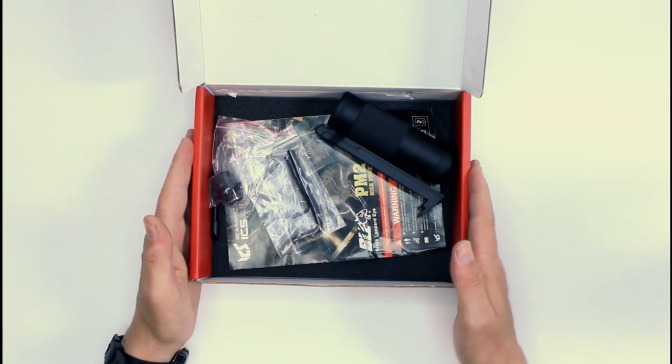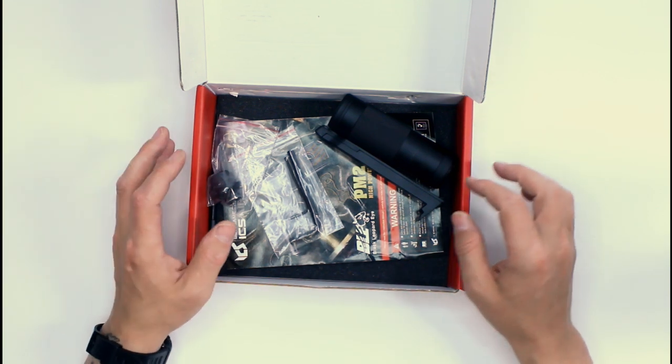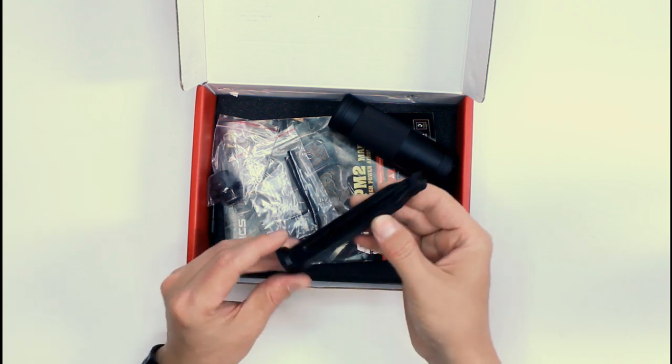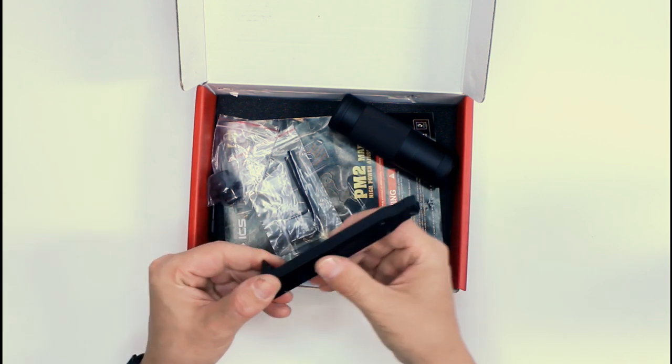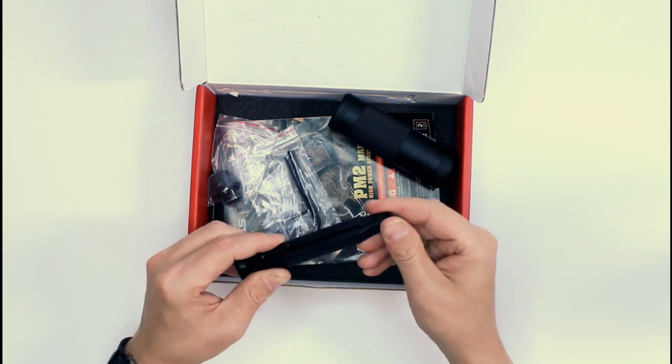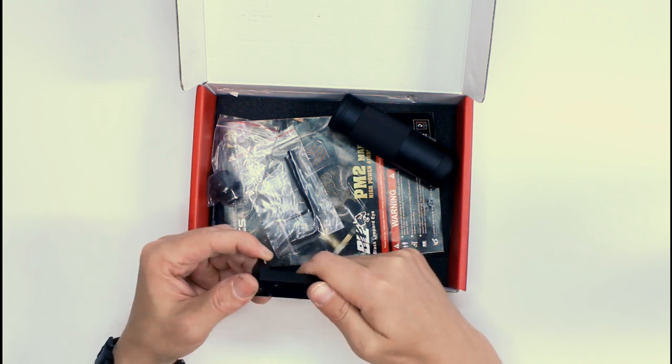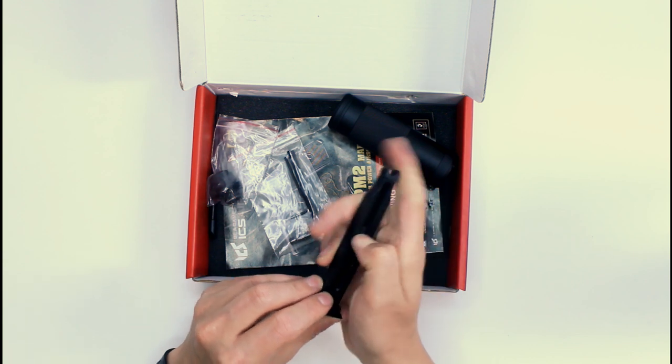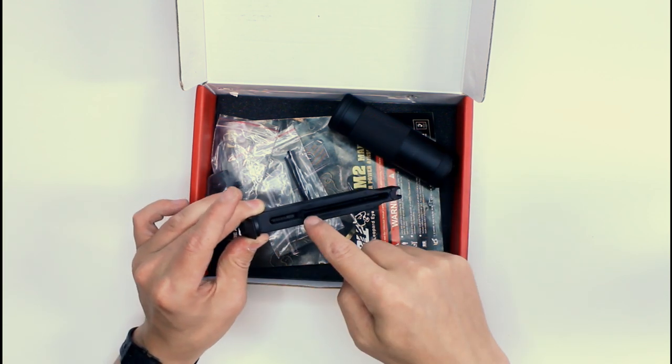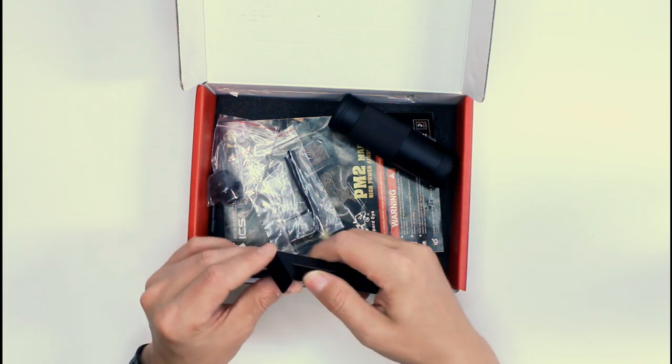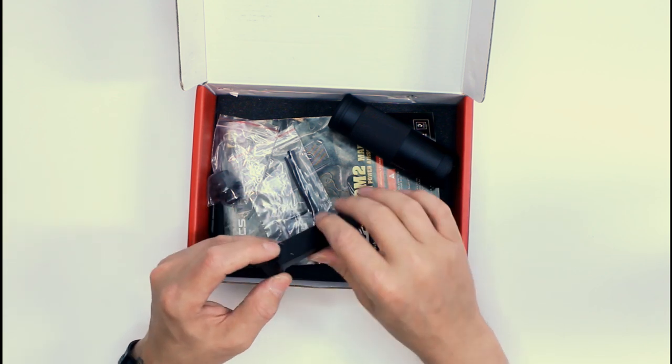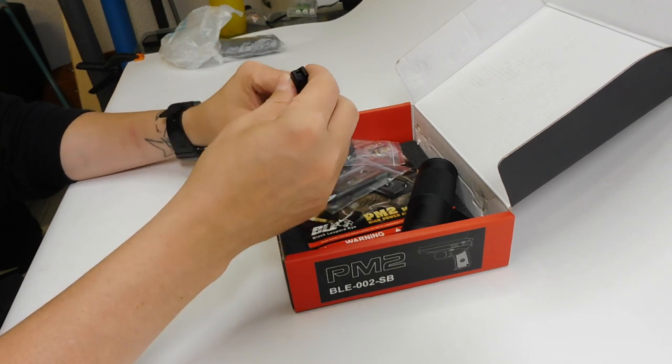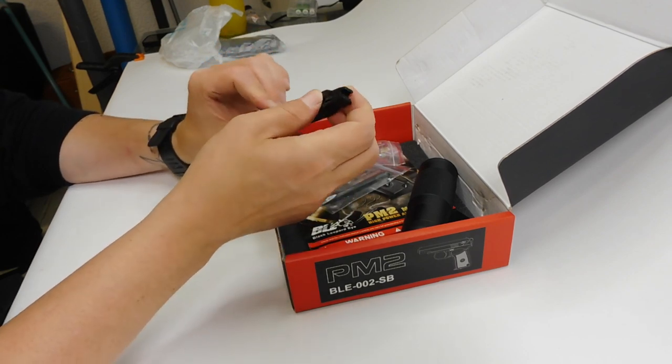So we'll take the pistol out and pop that to one side. We'll come back to that in a minute. The accessories and things you get in here are a 13-round magazine, which is predominantly metal with a plastic feed lip. It holds 13 rounds. You can actually lock the feeder to the bottom to speed load your BBs into there.